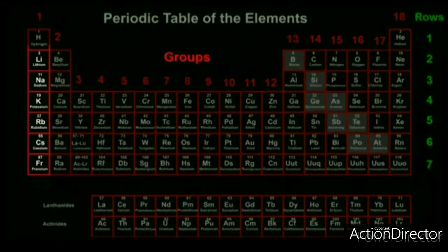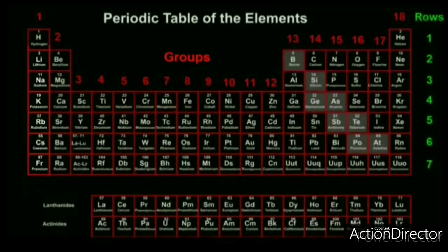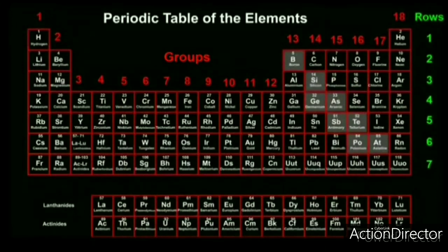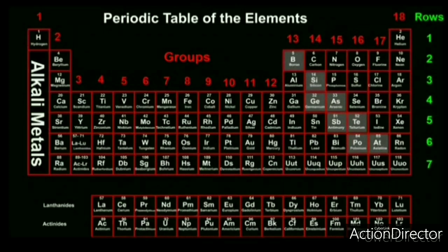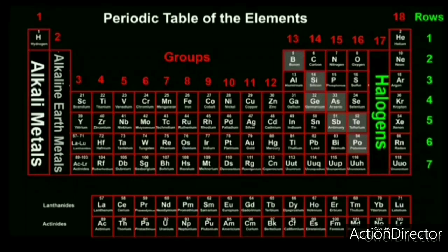Group 1 elements, except hydrogen, have similar properties and we call them alkali metals. Group 2 is alkaline earth metals. Group 17 is halogens, and group 18 is noble gases. You will have a detailed study about this in your higher class.